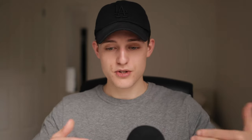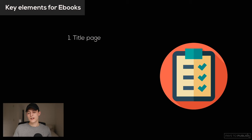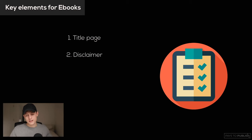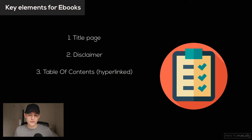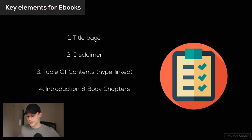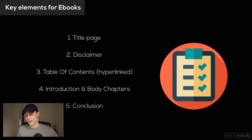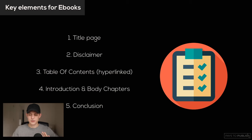Key elements for ebooks: first is the title page, then a disclaimer, then a table of contents which is hyperlinked. Fourth is the introduction and body chapters, then the conclusion. You can also add funnels before the table of contents to collect emails, but I'm not going over that today. At the end, we have a resources or references section.